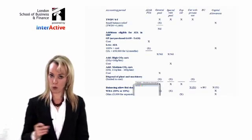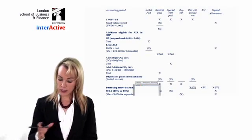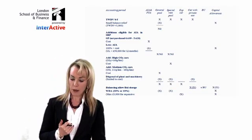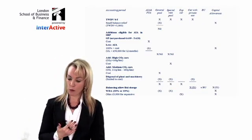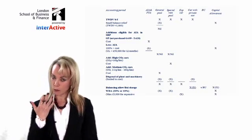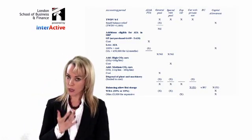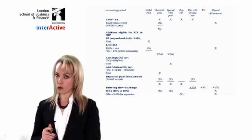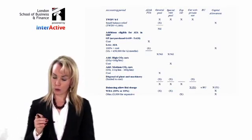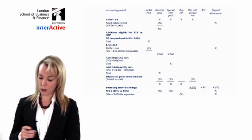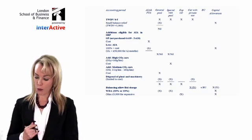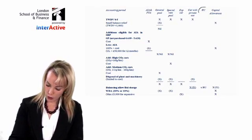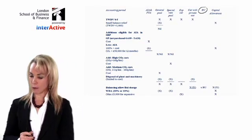The next stage is how to work out the allowances. This requires you to learn a proforma. Do you remember one of the things I said you have to do to pass F6 is to learn proformas? This is one of the first ones, and probably one of the most important ones, to calculate capital allowances on plant and machinery. What you need to do is put all your columns across the page: your general pool, your special rate pool, your expensive car brought forward, your car with private use by the owner, a column for the business use, and a column for capital allowances.